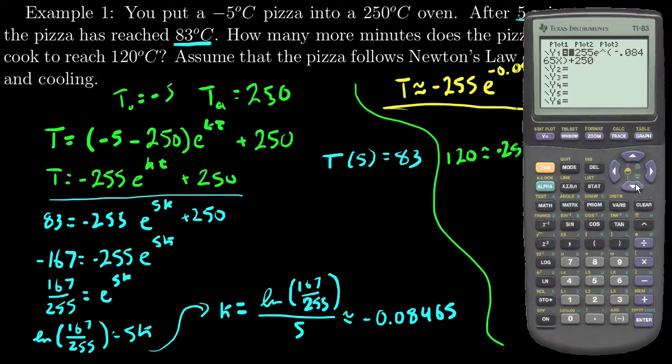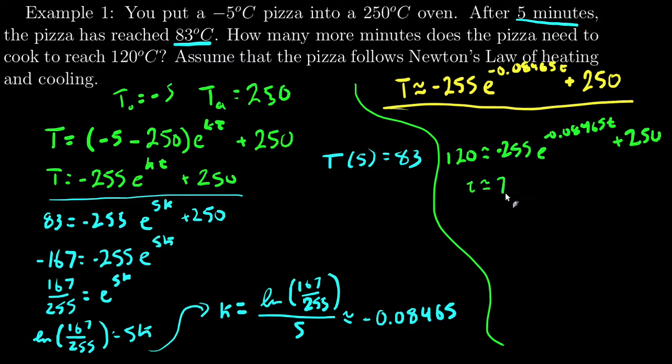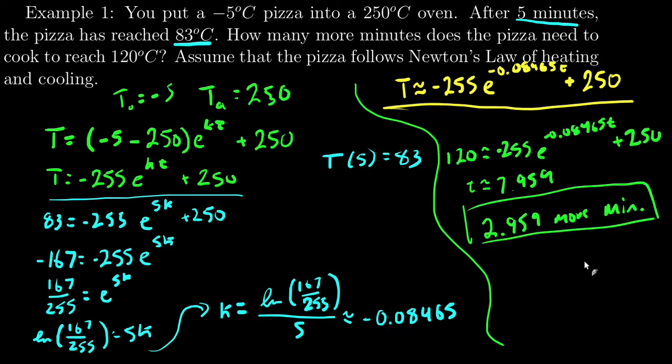To finish solving this I'm going to also plot our graph y equals 120, graph it, and find where they meet. So second calc intersect, that's my first curve, that's my second curve, and I'll go left to make my guess. And so I have 7.959, but it says how many more minutes and we already are five minutes in, so that would be 2.959 more minutes, or if we were just said to the nearest minute, three minutes.